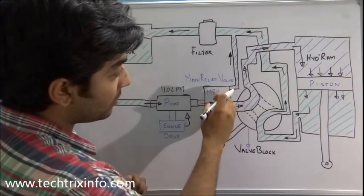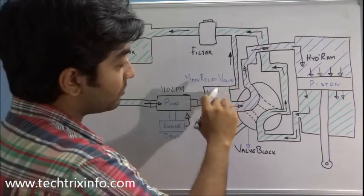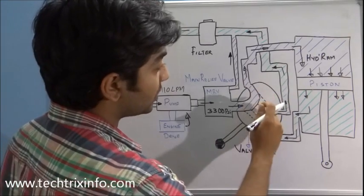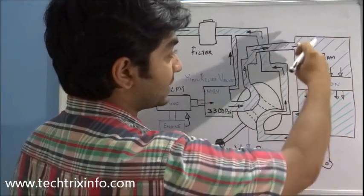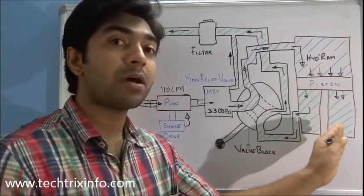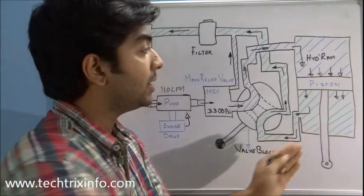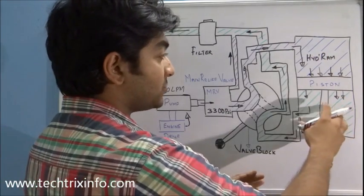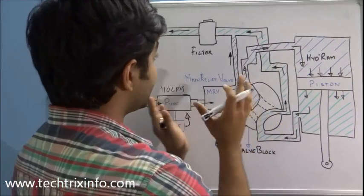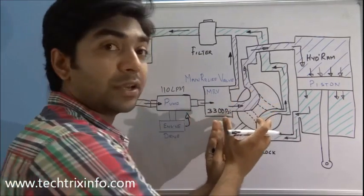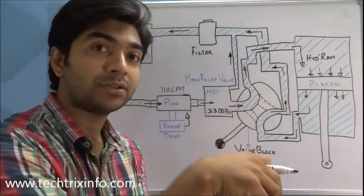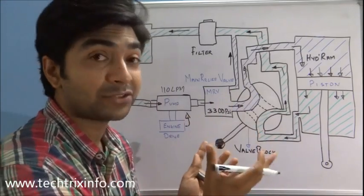Next we have the main relief valve, and after that we have the valve block. Through the valve block the oil is directed towards the actuators or hydraulic rams. These hydraulic rams convert the hydraulic energy created by the hydraulic circuit into action — into work. Let's see how it actually happens.